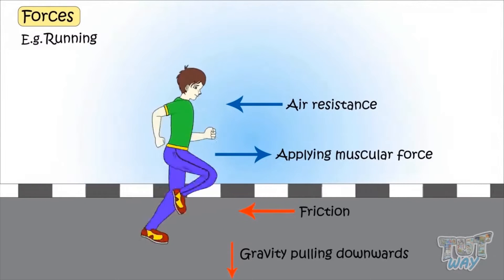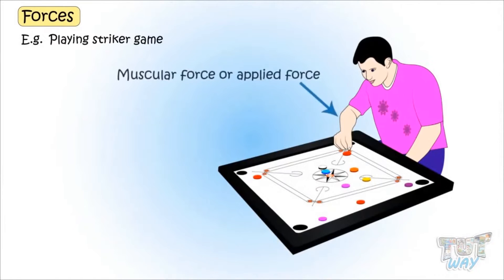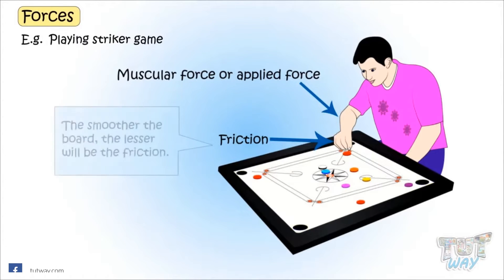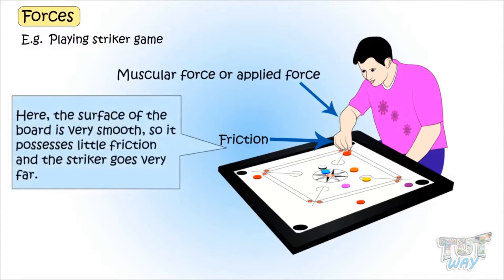Now let's see forces acting while playing a striker game. We apply muscular force, or applied force, to move the striker ahead. Friction is always present when two objects are in contact — here the striker and the board are in contact. The smoother the board, the lesser the friction; the rougher the board, the more the friction. Here the surface of the board is very smooth, so it has little friction and the striker goes very far.